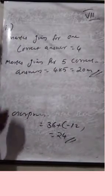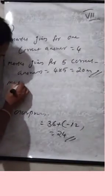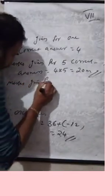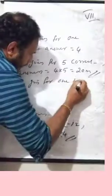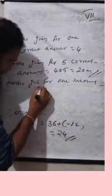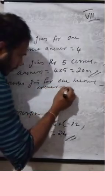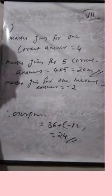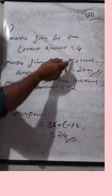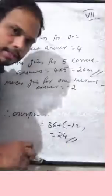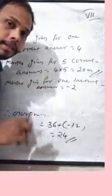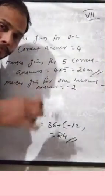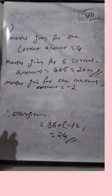Marks given for one incorrect answer equals minus 2. Since 5 questions are correct, the rest are incorrect. 15 minus 5 equals 10 questions are incorrect.